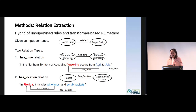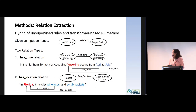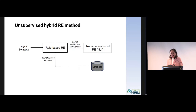Given an input sentence that is a sequence of tokens containing a source entity and a target entity, we treat the relation extraction task as a binary classification task, whereby the method determines whether a relationship from the source entity to the target entity exists or not. In this work, we focus on two relation types: 'has time' and 'has location' — so reproductive condition has time temporal expression, and habitat has location geographical location. Our relation extraction method is a two-step approach. We first implement a classical rule-based approach to extract entities matching rules we created. If our rules identify a pair of source and target entities as related, the relationship is stored in the database. Otherwise, we implement a zero-shot natural language inference approach to determine if the pairs of entities are related.